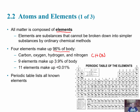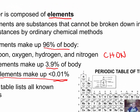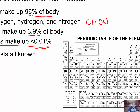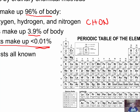Nine other elements make up 3.9% of body mass, and 11 trace elements are found in amounts of 0.01% or less. The periodic table lists all known elements in order of atomic number — hydrogen is number one, helium two, lithium three, and so on. Elements are arranged in order of increasing atomic number, which really reflects an increasing number of protons in the nucleus. Hydrogen has one proton, helium two, lithium three, et cetera.